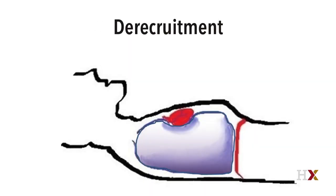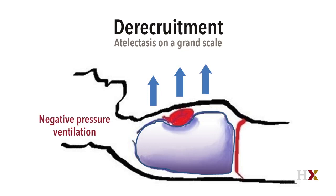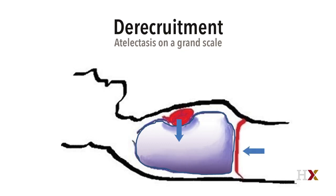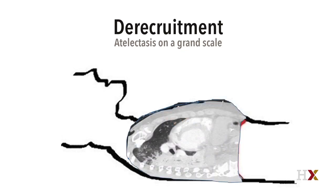Another major concept in the pathophysiology of hypoxemia is derecruitment — atelectasis on a grand scale. We have patients who come in with negative inspiratory force, participating in negative pressure ventilation, which is a very efficient way of ventilating. We will sedate them, relax them, intubate them, put them on the ventilator, and they will profoundly derecruit. We lie them flat, and then their lungs, which are boggy and heavy with edema and infiltrates, will collapse upon themselves. It gets worse because the heart will compress the lungs, and the abdominal contents come up and compress the inferior portions. This CT scan image of someone laid flat shows the heart actually causing compression and derecruitment behind it.